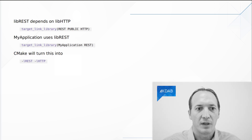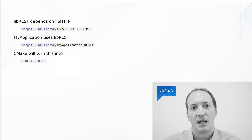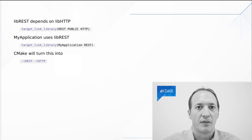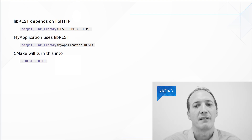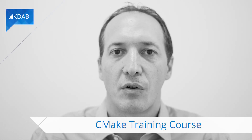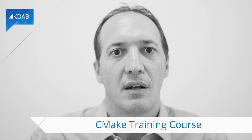On the link line, we can see dash L REST, dash L HTTP. CMake has done the right thing — turned these dependencies into the actual link line that will be used to link the executable. For more information about CMake, we can deliver a two-day training, either remotely or on-site. In the next video, I will tell you a bit more about this training and what's in it. Thank you for watching this series.